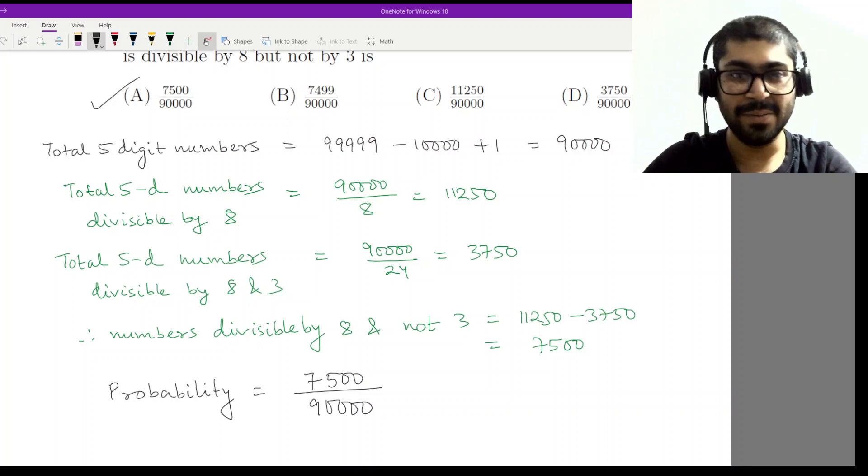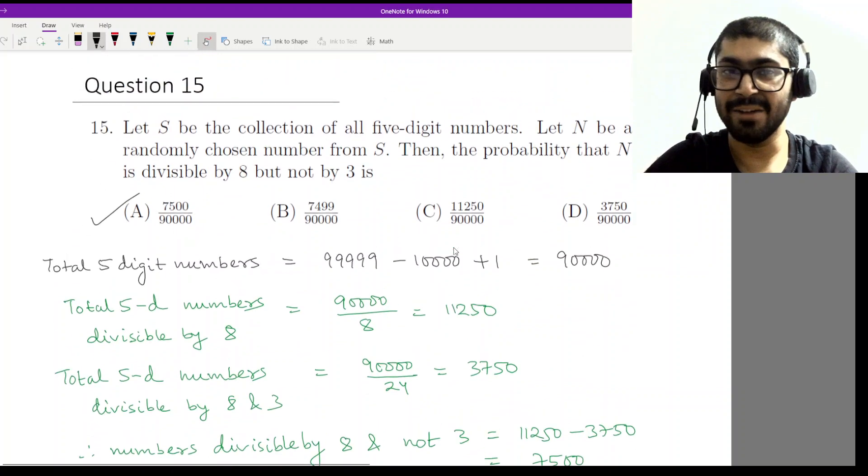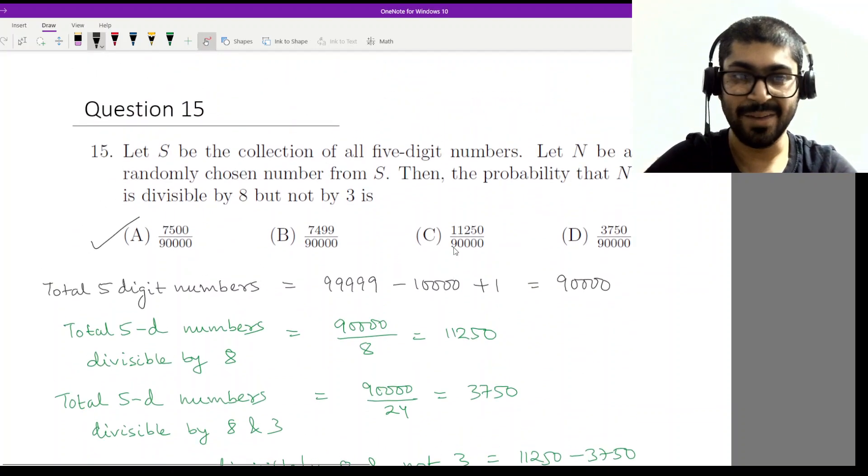This occurs because of the properties of GCD and because 8 and 3 are co-prime. 11,250 minus 3,750 gives you 7,500, and that is the option in A. I hope you won't have any problem with this question. If you still feel there is any doubt, please rewind the video and watch it slowly. Now that question 15 is done, we will meet in question 16. Bye everyone.